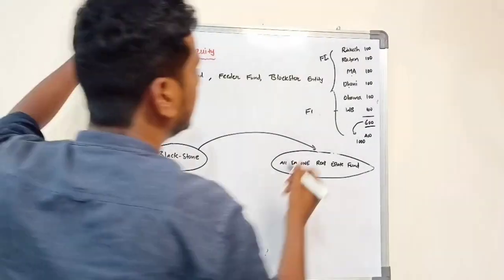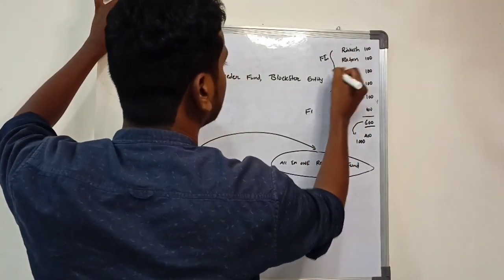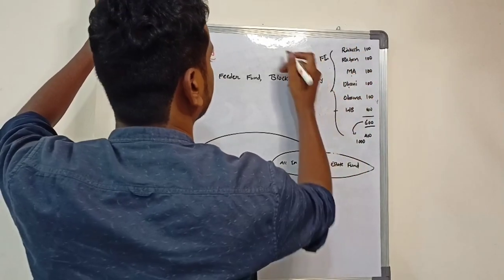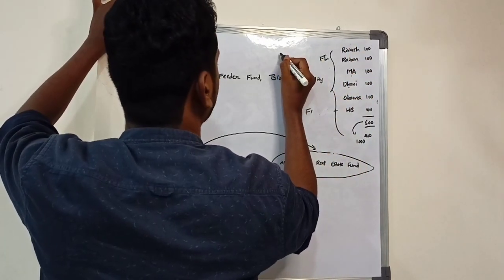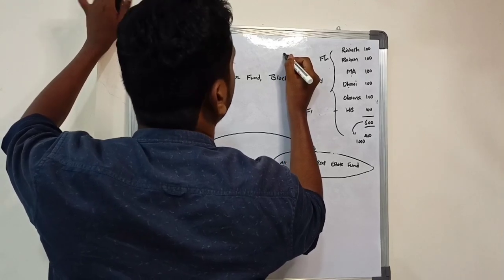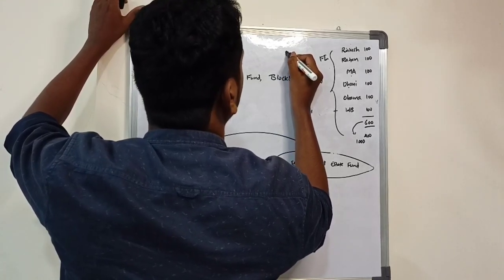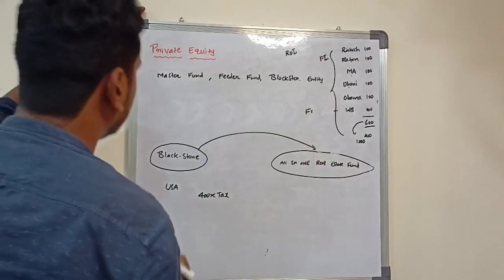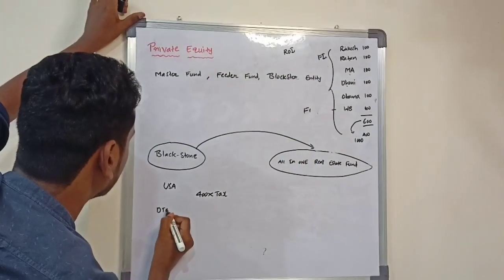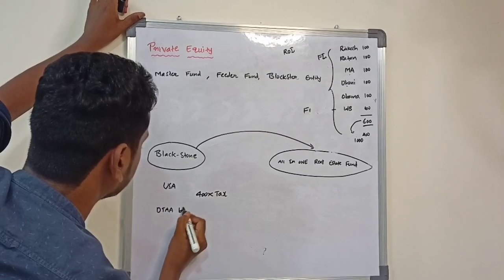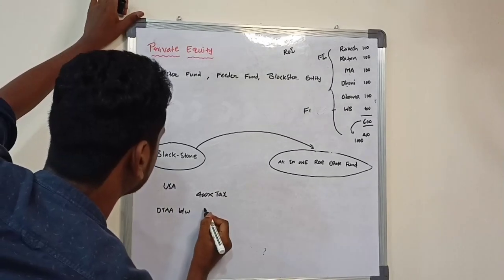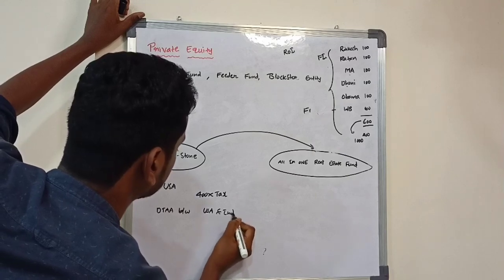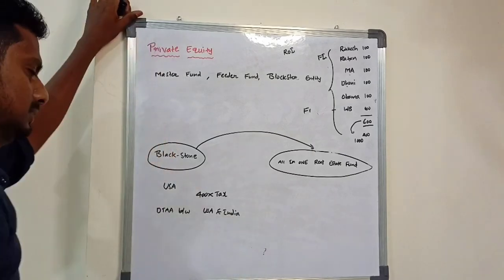At the same time, the Indian government will levy tax on Rakesh Jhunjhunwala, Ratan Tata, Mukesh Ambani, and Dhoni — because they are residents of India. Let us assume that there is no double taxation avoidance agreement between USA and India. So tax is charged two times.